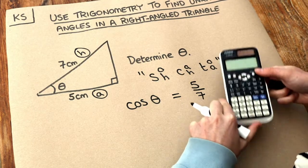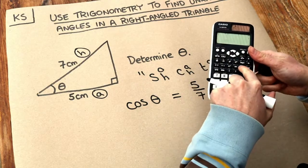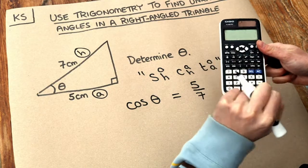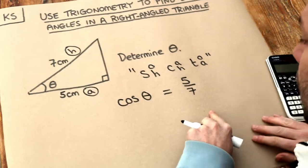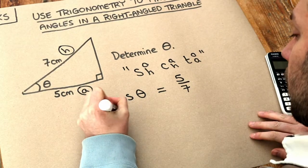The way you can find it in your calculator is if you do shift cos, you can see there's a cos minus one. That means inverse cos. So we're going to do inverse cos of both sides.